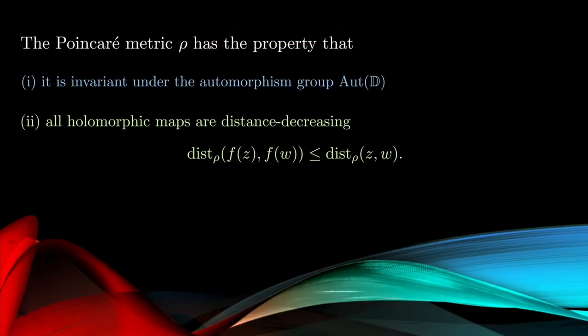The Poincaré metric has the property that it is invariant under the automorphism group, namely the fractional linear transformations are isometries, and all holomorphic maps by the Schwartz-Pick theorem are distance decreasing with respect to the distance function associated to the Poincaré metric.